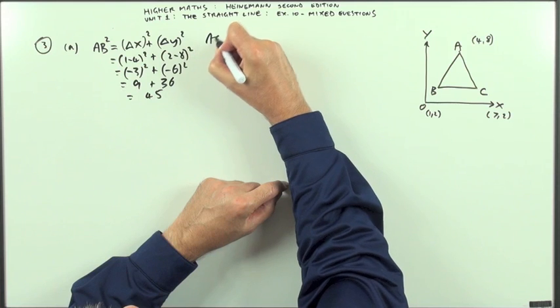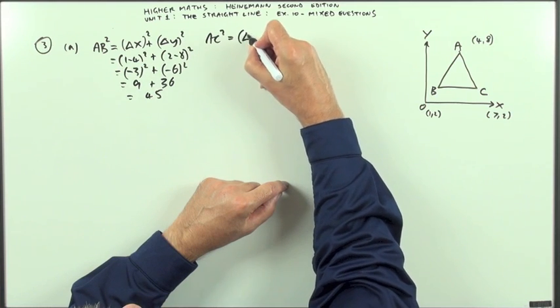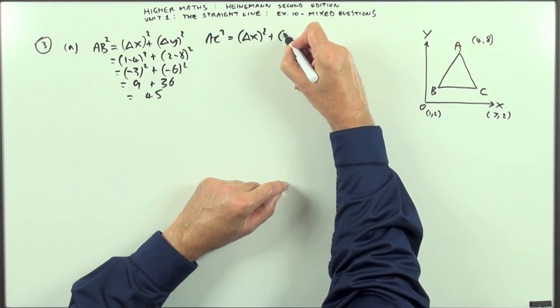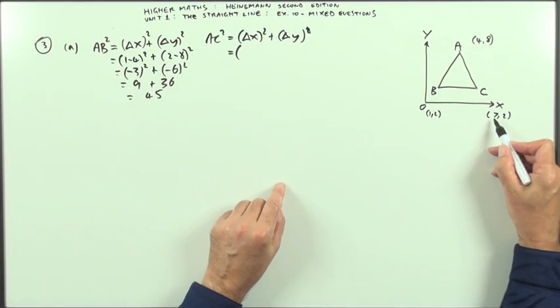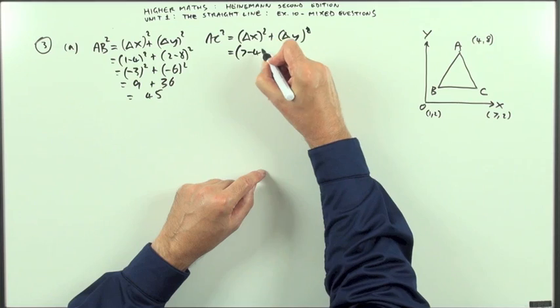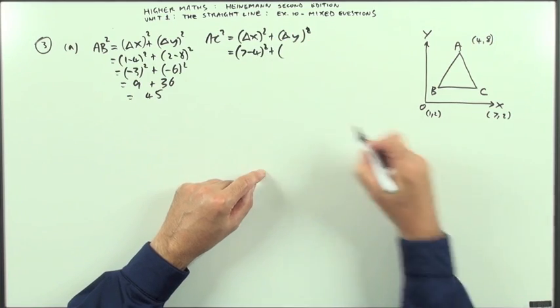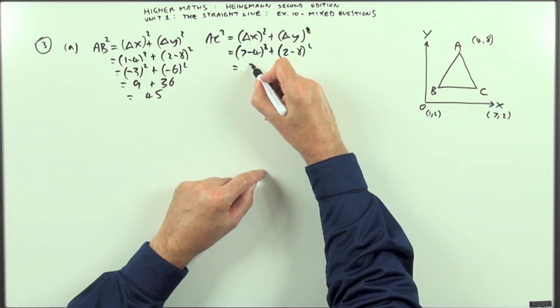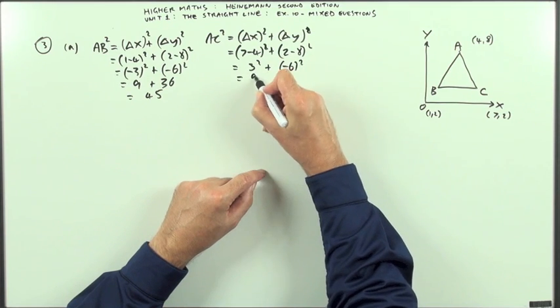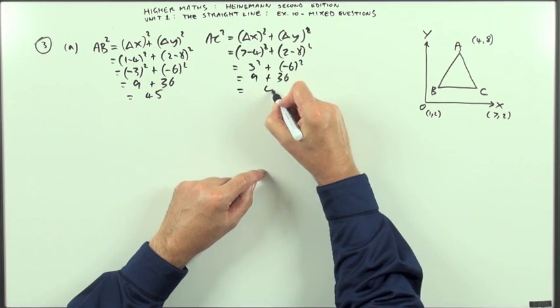Then I'll work out AC squared exactly the same way. The difference in the X's and the difference in the Y's. So I've got difference in X's, 7 take away 4, 2 take away 8. So that gives me 3 squared and negative 6 squared, which is again 9 plus 36, which is 45.